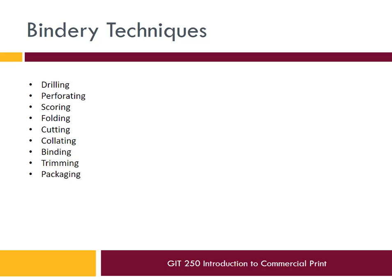Bindery includes drilling holes — think of something that's three-hole punched. If you have a stack of thousands of sheets, you'd use a big drill instead. Perforating: if you've ever wondered how coupons are perforated in a magazine, someone does that in bindery. Scoring puts creases in a page so it folds nicely, and folding is the next step after scoring. Cutting is also important — because press sheets are a set size, your design may vary, and you can't print to the edge of the page, making cutting essential to nearly every print job.